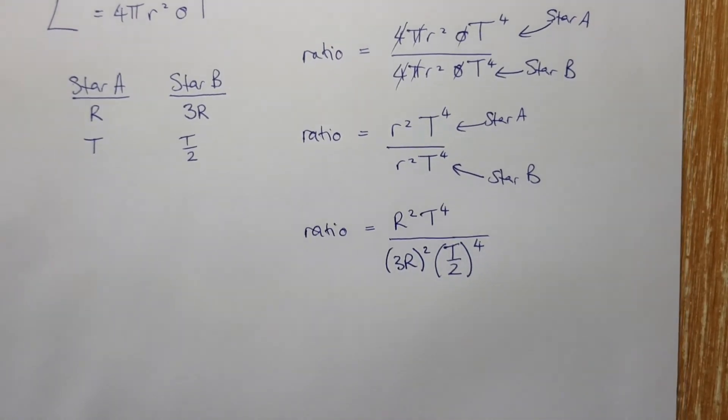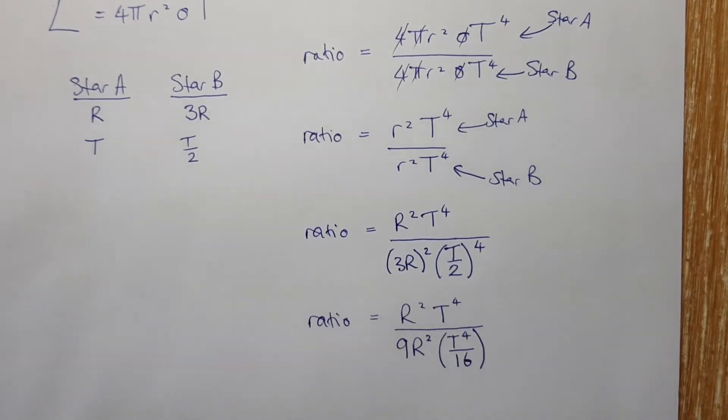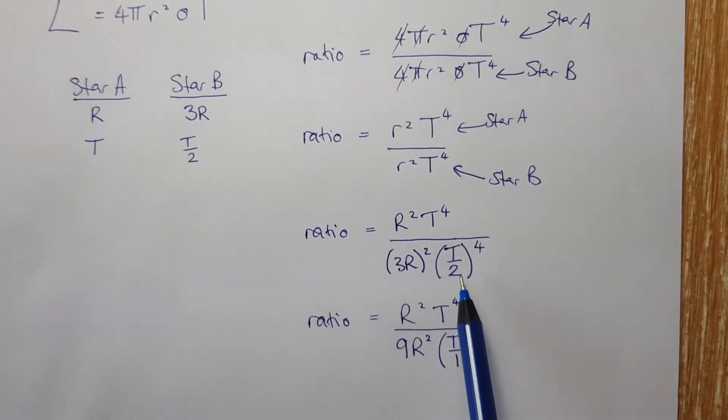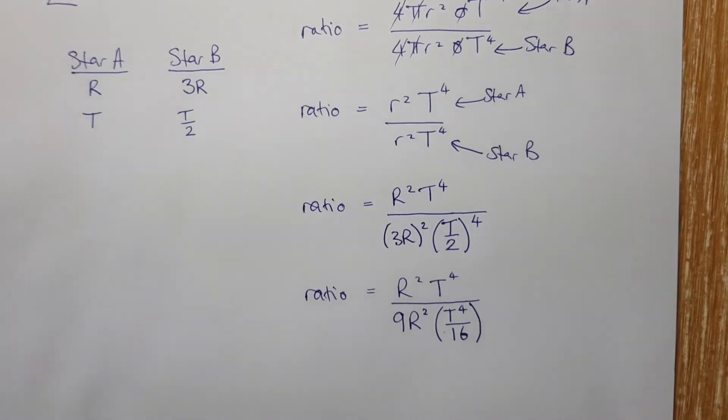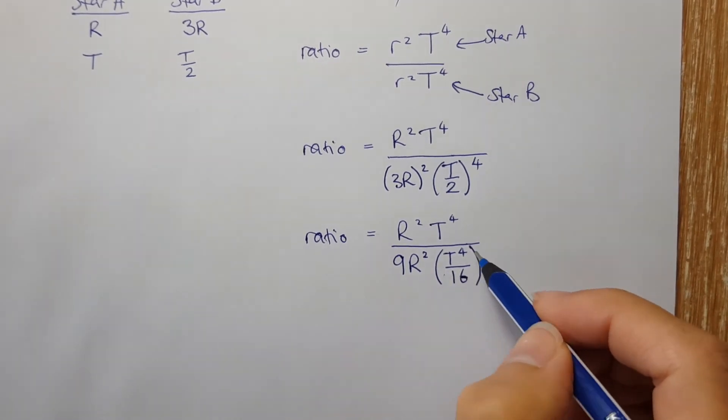Okay, now we have to do a little bit of algebra very carefully. Two times two is four times two is eight times two is 16 there.